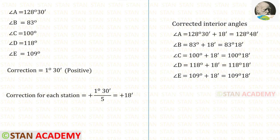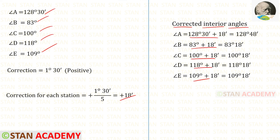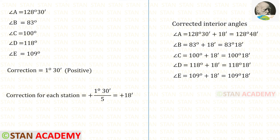Now let us find the corrected interior angles. We add 18' to each of the five observed angles. When we do that, we get the corrected angles. We can verify our answers by adding all the corrected angles — they sum to 540°, which confirms the result.